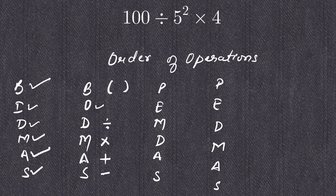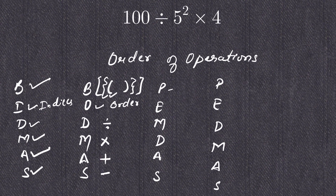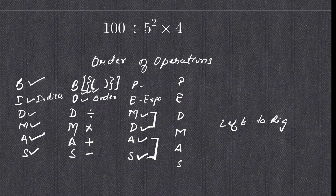Here I is for indices. In PEMDAS, P is for parenthesis. These brackets can be the smaller bracket, the middle bracket, or the larger bracket. When solving brackets, we first solve the smaller bracket, then the middle bracket, then the bigger bracket. E is for exponent or power, M for multiplication, D for division, A for addition, and S for subtraction.